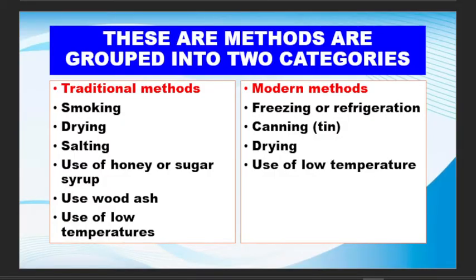Now let's look at the various methods that we use to preserve these cereals and pulses. We use the traditional ones and the modern ones. Traditional methods include smoking, drying, use of honey or sugar, use of wood ash, and use of low temperature.